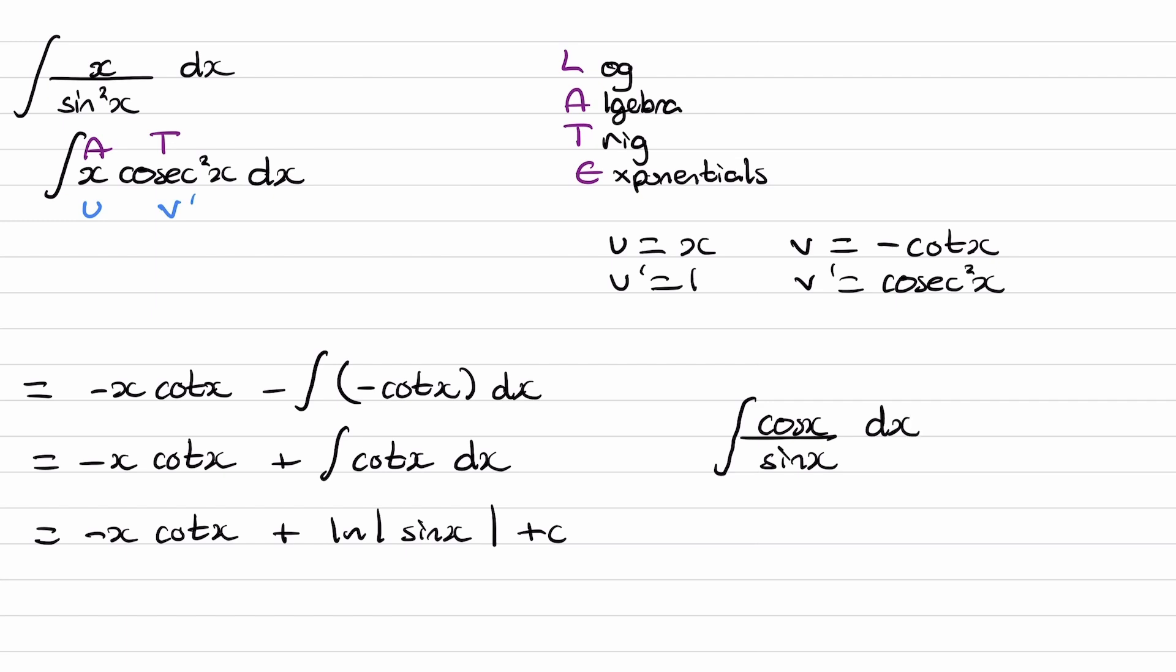So one way that we can show that the integral of cot x is ln sin x, this here is of the form of f dash x over f of x. And whenever we are integrating something of that form, the solution would be of the form of ln of f of x, which in this case would be ln of sin x. If you were to differentiate ln of sin x, that would give you exactly this.